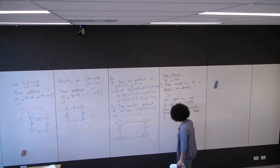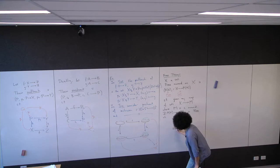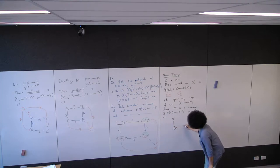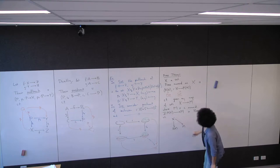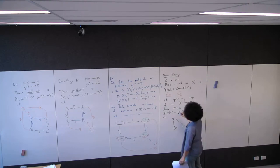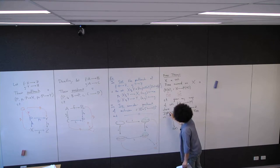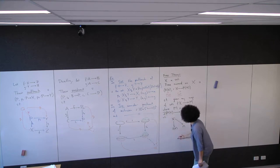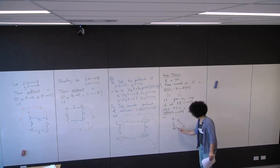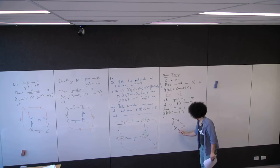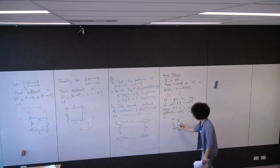We have X, we have F(X), and then we have the monoid M. I want to call the map from X to M 'f', and the unique map 'f̃'. So we have f, we have this iota map, there is a unique map f̃ here, such that this diagram commutes.